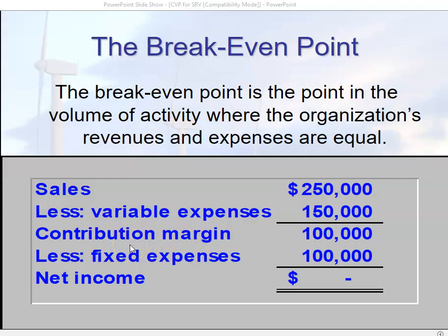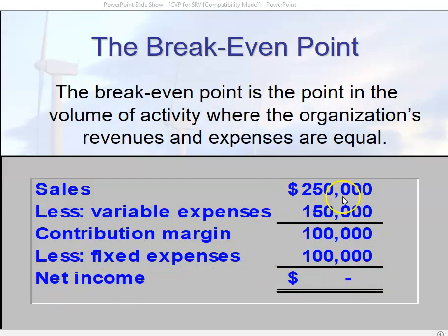This figure represents the company's current contribution to making a profit. Unfortunately, we can't call it profit because we still have to subtract out all fixed expenses. This diagram shows an example of break-even: $250,000 in sales minus $150,000 in variable expenses and $100,000 in fixed expenses gives us no net income and no net loss.